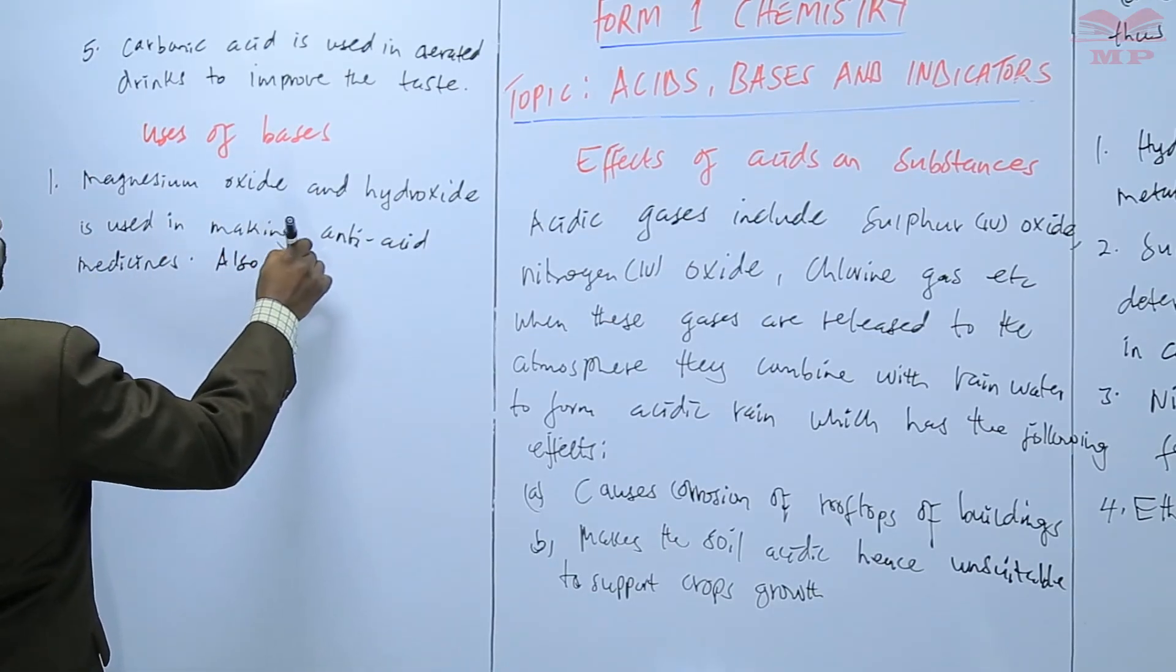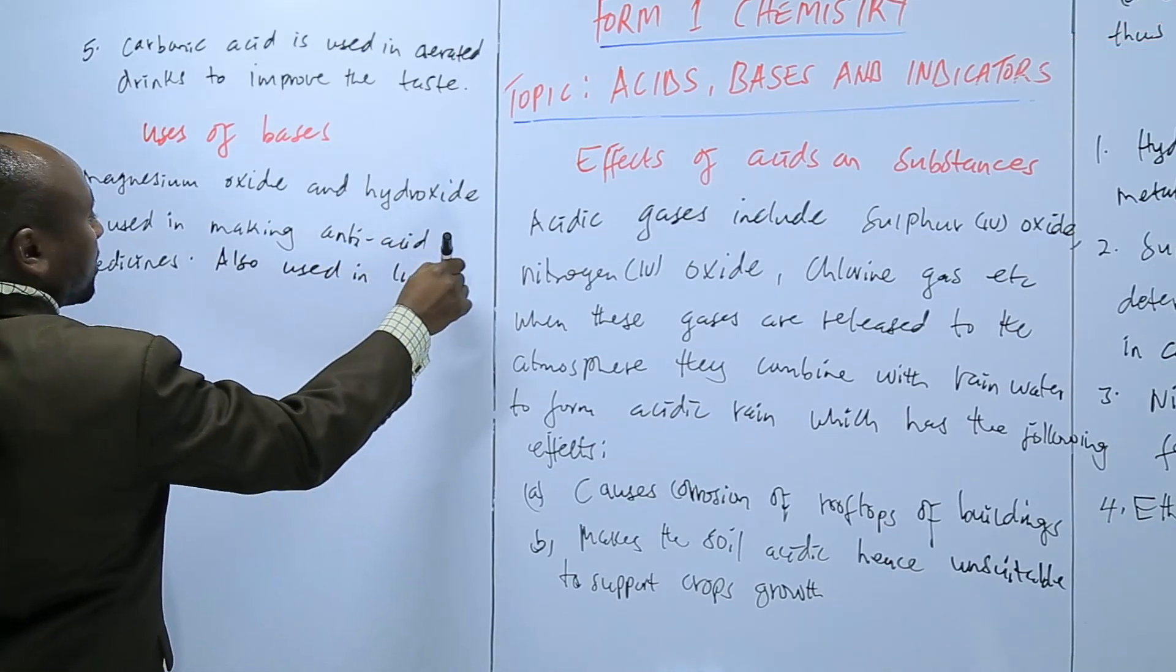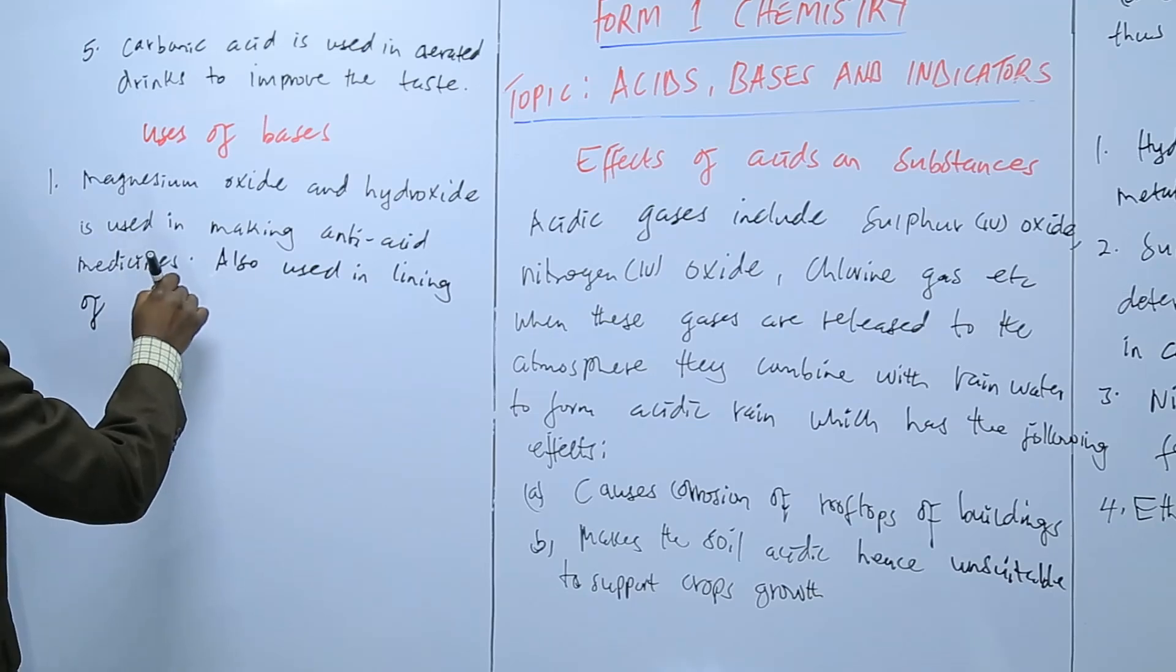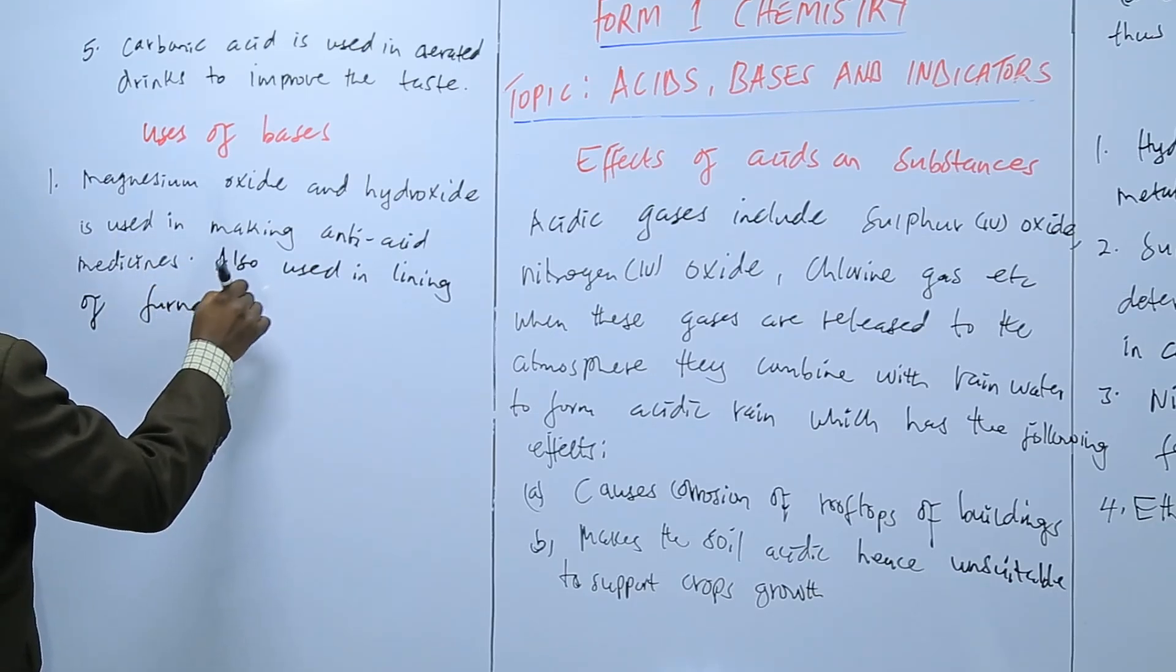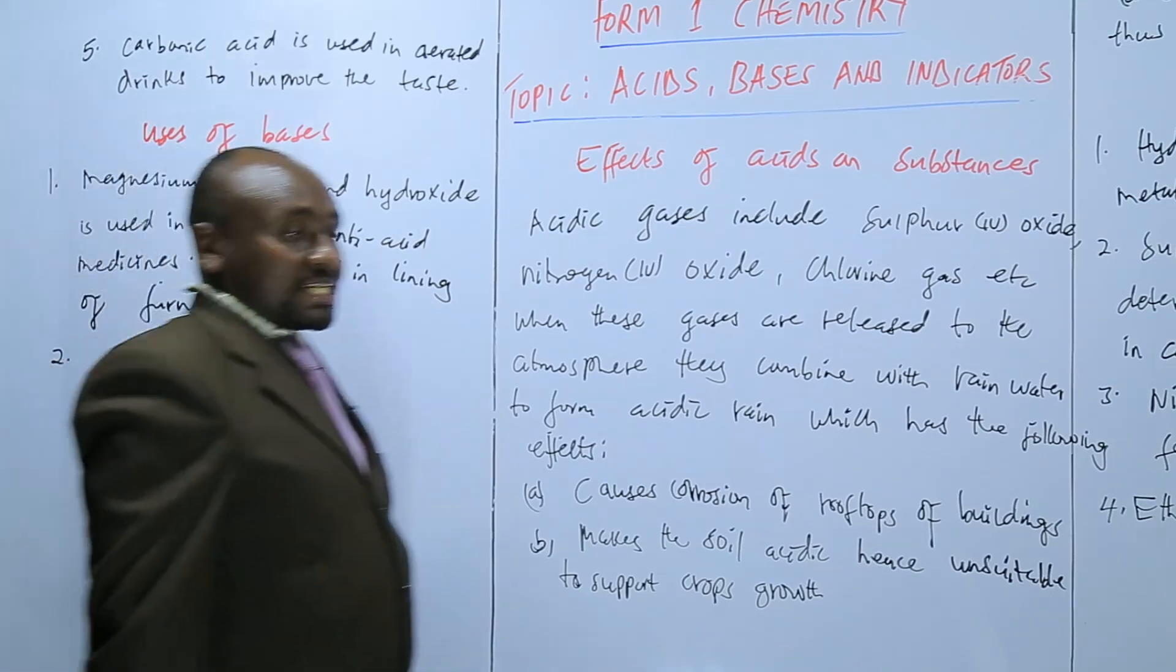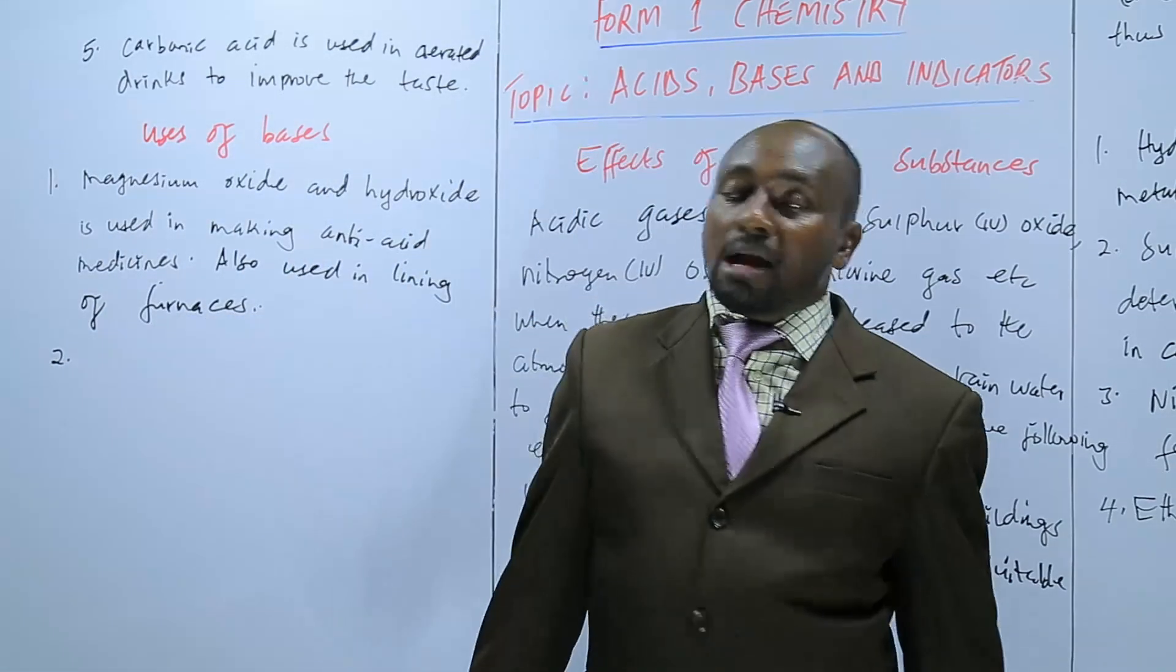Also used in lining of furnaces. The furnaces, especially the furnaces that have a lot of heat, they are usually lined with magnesium oxide.